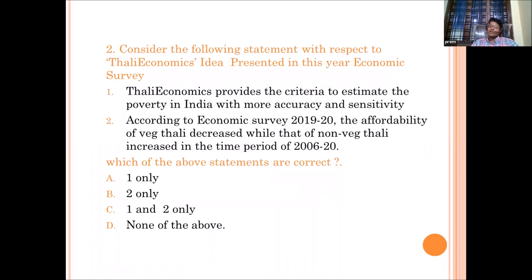Second question: Consider the following statements with respect to Thali Economics, the idea presented in this year's economic survey. This was very trending because it was the first time the economic survey came up with such a new word, which got so much media attention. Statement one: Thali Economics provides a criteria to estimate poverty in India with more accuracy and sensitivity. Statement two: According to Economic Survey 2019-20, the affordability of veg Thali decreased while that of non-veg Thali increased in the period 2006 to 2020.